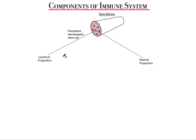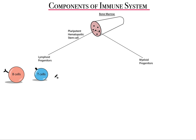Let's look into lymphoid progenitors first. They can become B cells or T cells depending upon where they mature. B cells undergo positive and negative selection in the bone marrow and migrate to the spleen and lymph nodes to complete their maturation process. The lymphoid progenitor that migrates to the thymus undergoes positive and negative selection and matures into a variety of T cells.